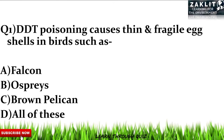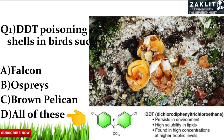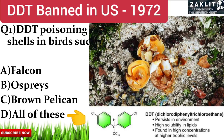The correct option is option D — all of these. DDT, which is an organochlorine pesticide, causes thinning and fragile egg shells by altering the bird's calcium metabolism. DDT was banned in the United States in the year 1972.